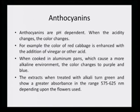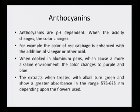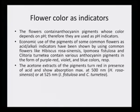The extracts when treated with alkali turn green and show greater absorbance in the range of 575 to 625 nanometers depending upon the flowers used, as measured in a UV-visible spectrophotometer. This is an indication that anthocyanin is present. Flowers containing anthocyanin pigments whose color depends on pH can therefore be used as pH indicators easily.